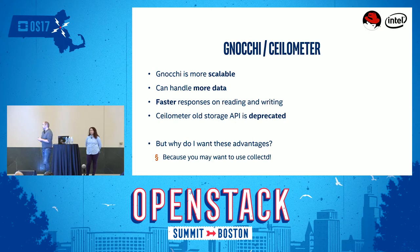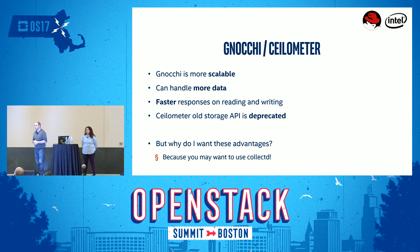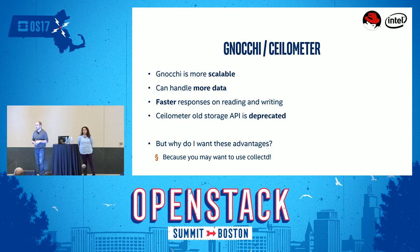A quick point about Gnocchi versus Ceilometer, because a lot of people are still confused about the two projects. It's more about history. Ceilometer is older — five years old — while Gnocchi is only three years old. The creation of Gnocchi comes from the fact that Ceilometer used to leverage MongoDB by default, which was not used in a very scalable way. There was a lot of data being stored with no aggregation done in advance, so as soon as you would retrieve data from Ceilometer, it would take ages to compute an average because you had millions of samples in a single MongoDB collection.